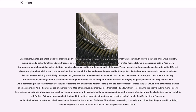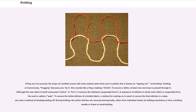If they are not secured, the loops of a knitted course will come undone when their yarn is pulled; this is known as ripping out, unraveling knitting, or humorously, frogging — because you rip it, rip it, which sounds like a frog croaking.